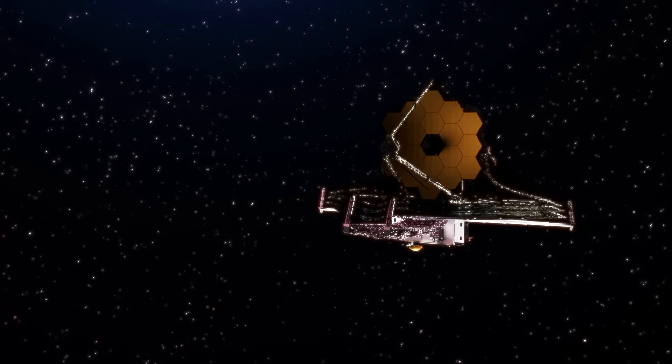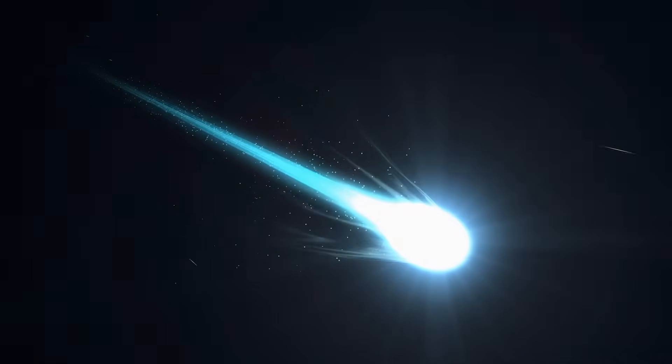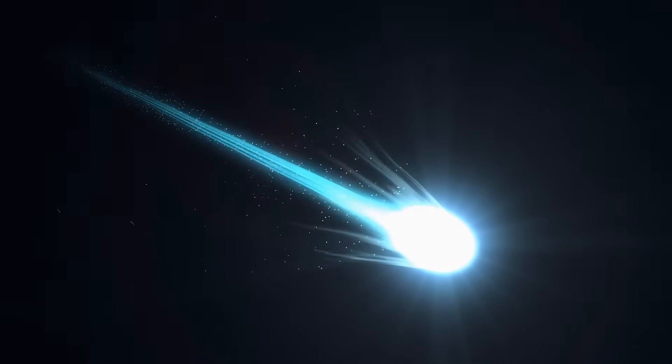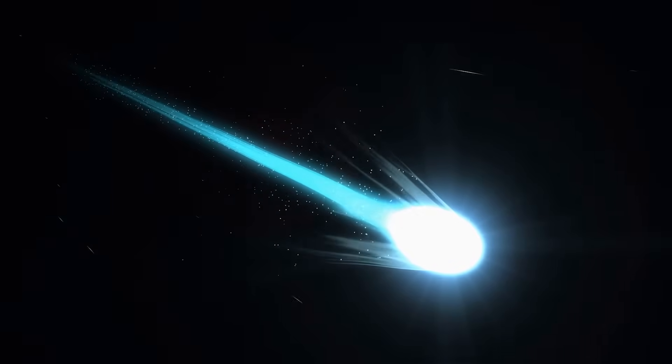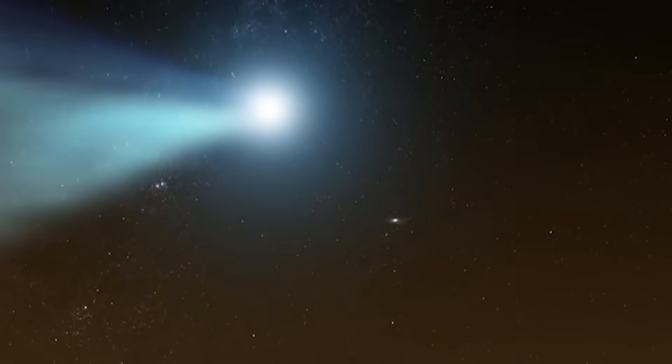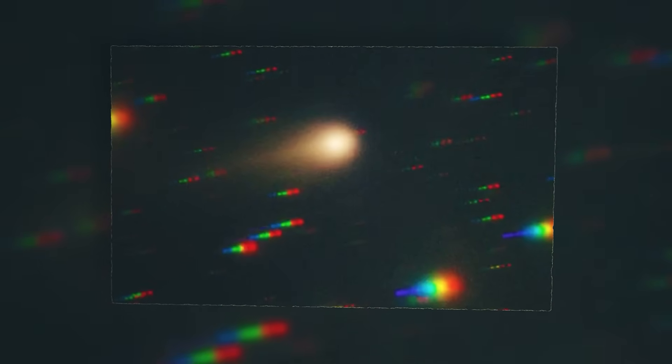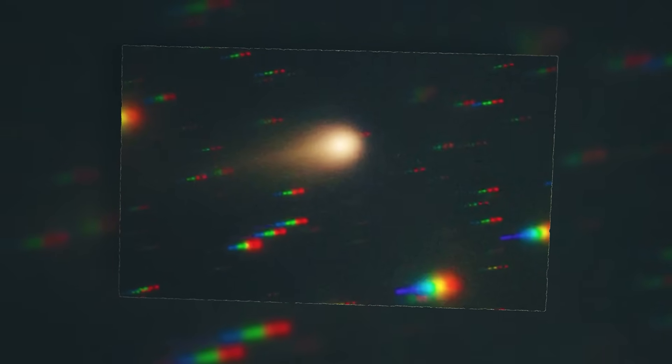For every single answer the James Webb Space Telescope gave us about 3i Atlas, it created 10 new, more profound questions. We know its incredible speed, a velocity so high it could only have come from another star. We know its approximate size, a city-sized chunk of something, and we know it's wrapped in a mysterious glowing fog of carbon dioxide gas. But we don't know why.